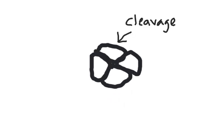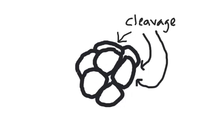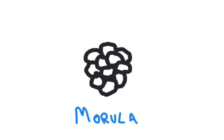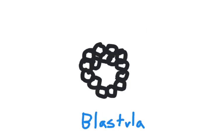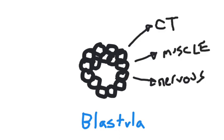Early development is characterized by rapid rounds of mitosis. As the cells divide, they get smaller, but otherwise they are not changing. These cells are considered omnipotent stem cells. They are capable of giving rise to any and all tissues in the human body.